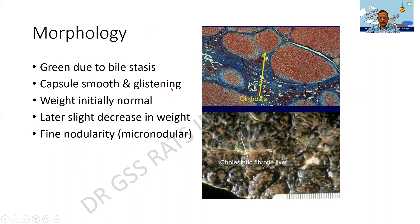Morphologically, you find that the gallbladder itself and the liver become green due to the stasis of bile. The capsule of the liver is smooth and glistening — glistening because it is stretched and shiny. The weight is initially normal but as cirrhosis develops it becomes lesser. There is a fine nodularity or micronodular cirrhosis. Histologically, these are the hepatic parenchyma and these are the bands of fibrous tissue dividing it. The nodules are of varying sizes and there is an effacement of architecture, typical of cirrhosis.